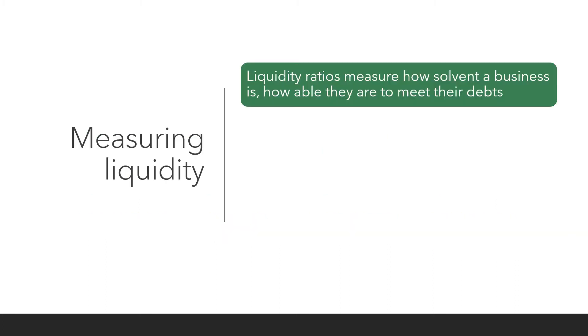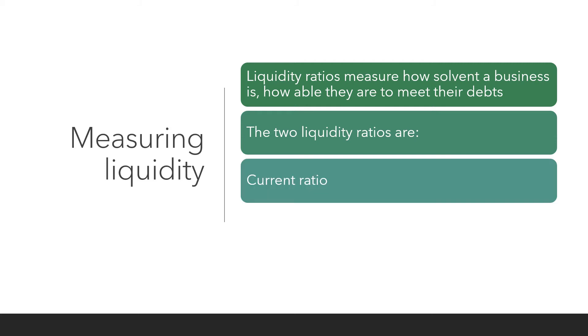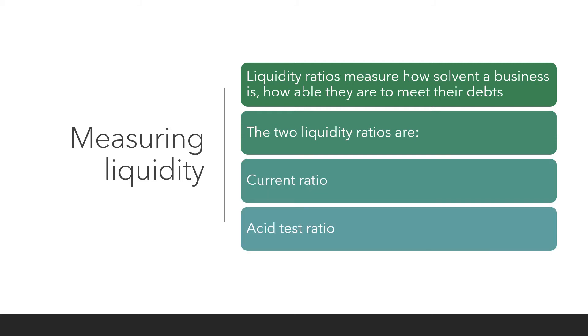Measuring liquidity. Liquidity ratios measure how solvent a business is — so how able are they to meet their debts? The two liquidity ratios are the current ratio and the acid test ratio.